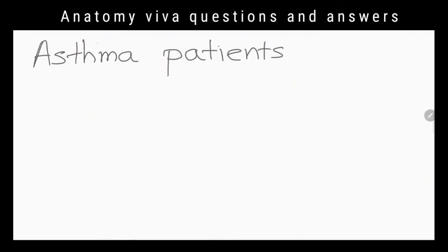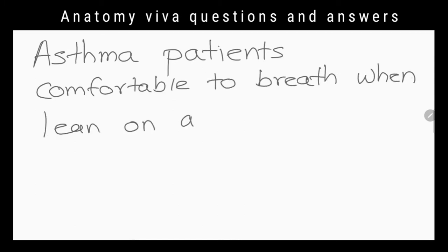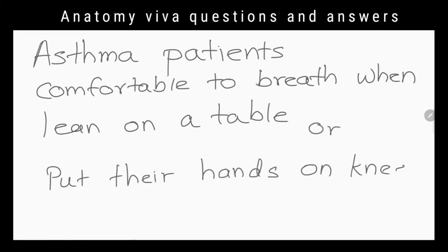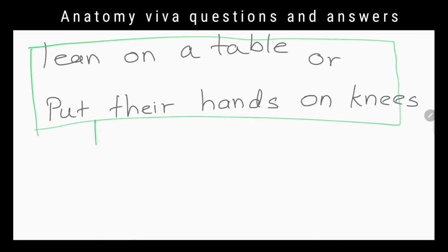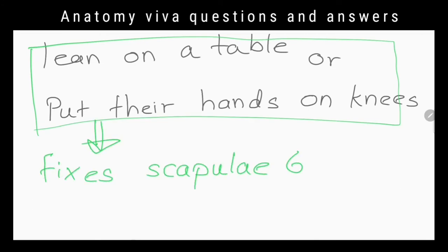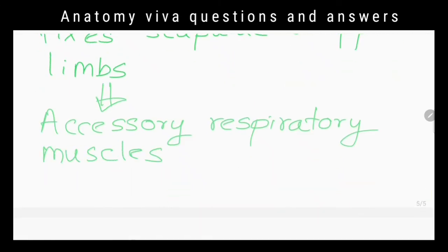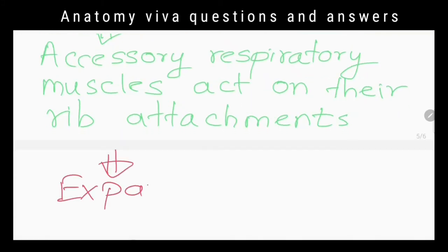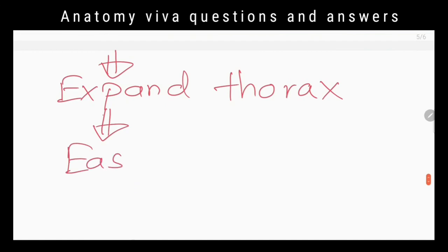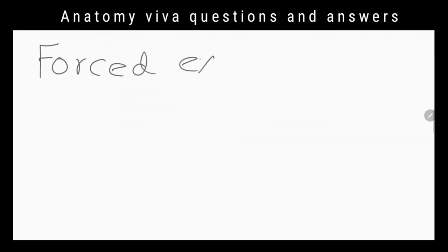Why do asthma patients feel comfortable breathing when they lean on a table or put their hands on their knees? Because leaning forward and fixing the arms fixes the scapula and upper limbs, so pectoralis major, pectoralis minor, serratus anterior, and other accessory respiratory muscles are able to act on their rib attachments and expand the thorax.